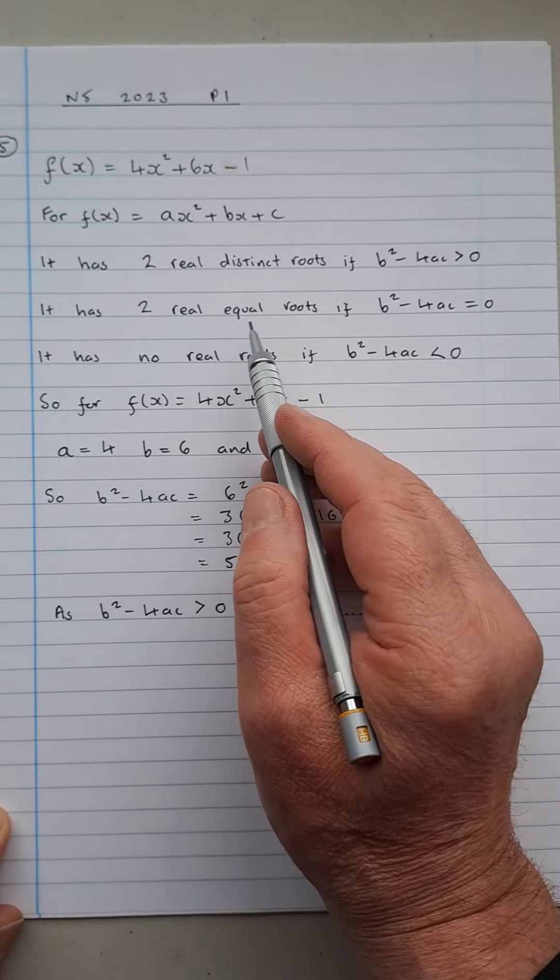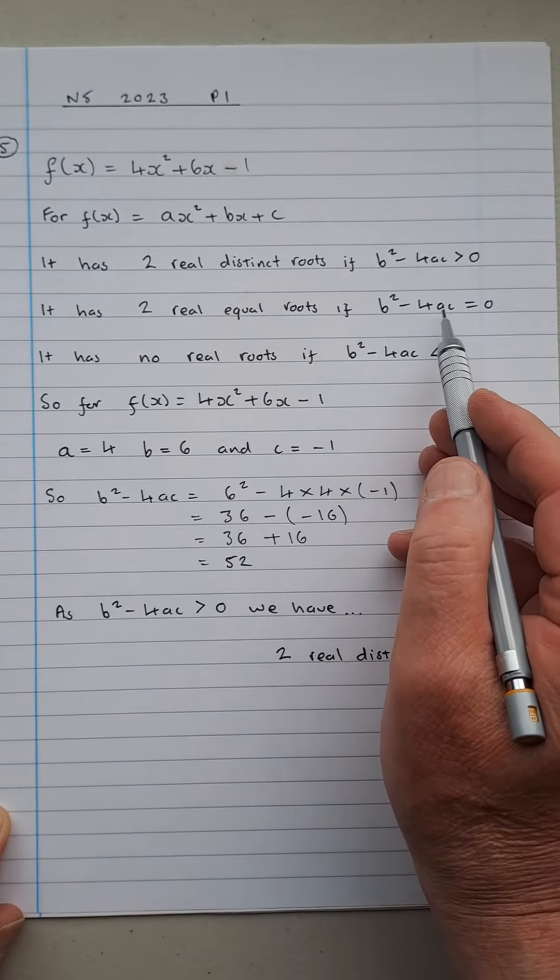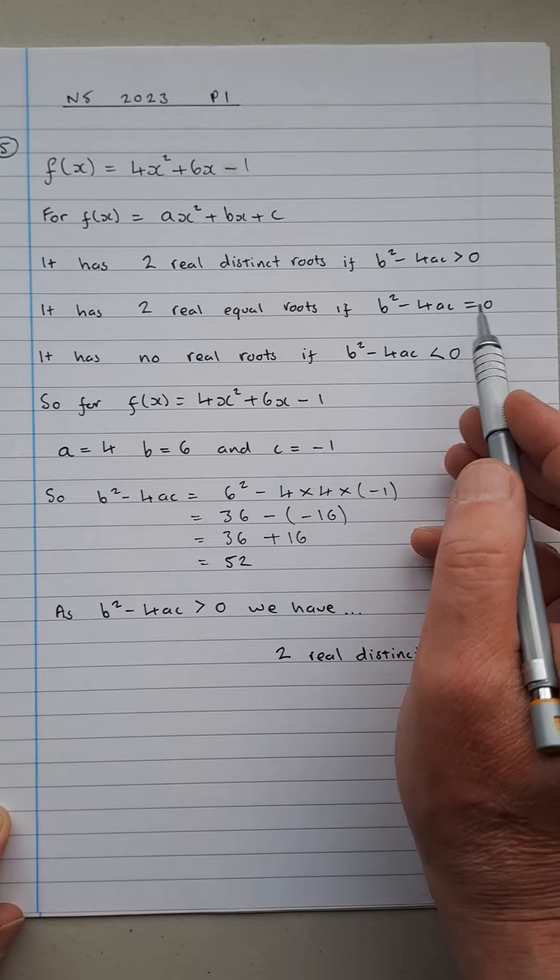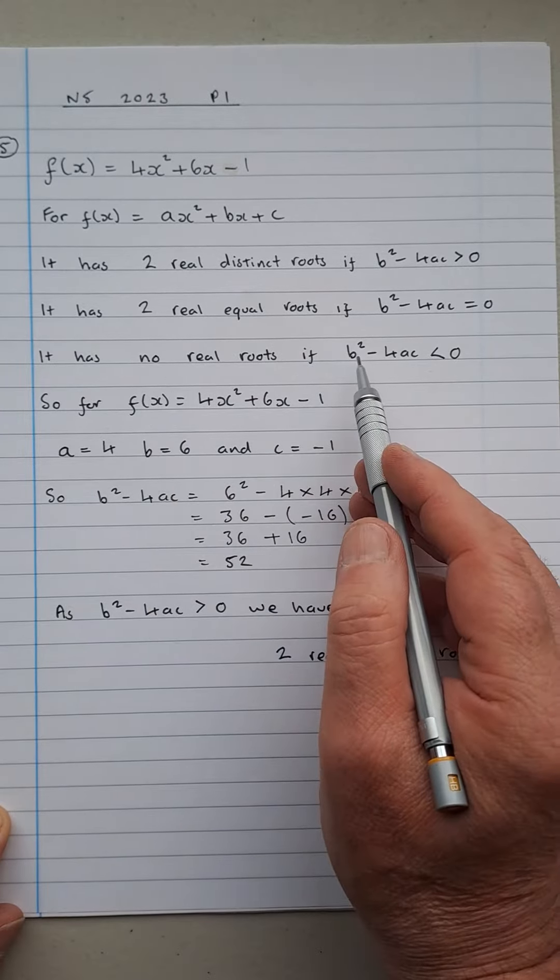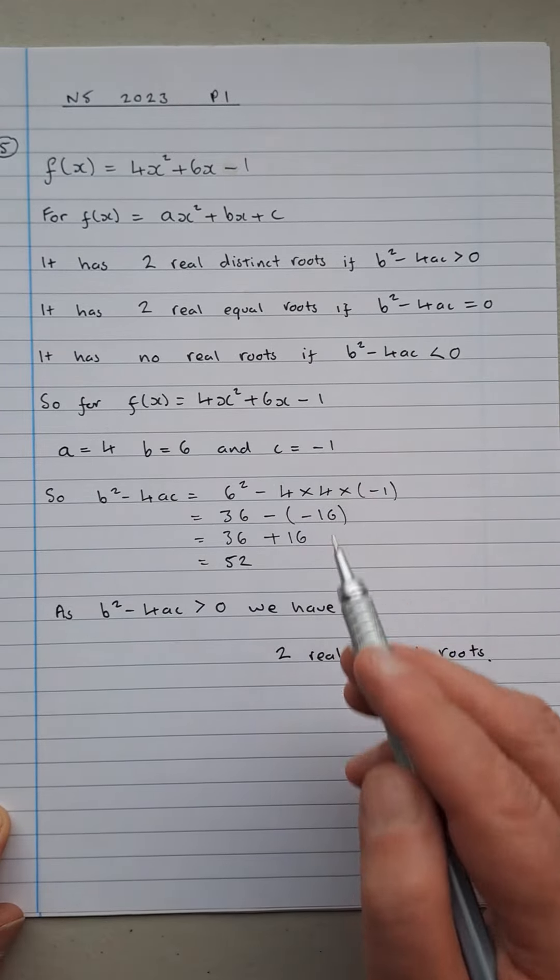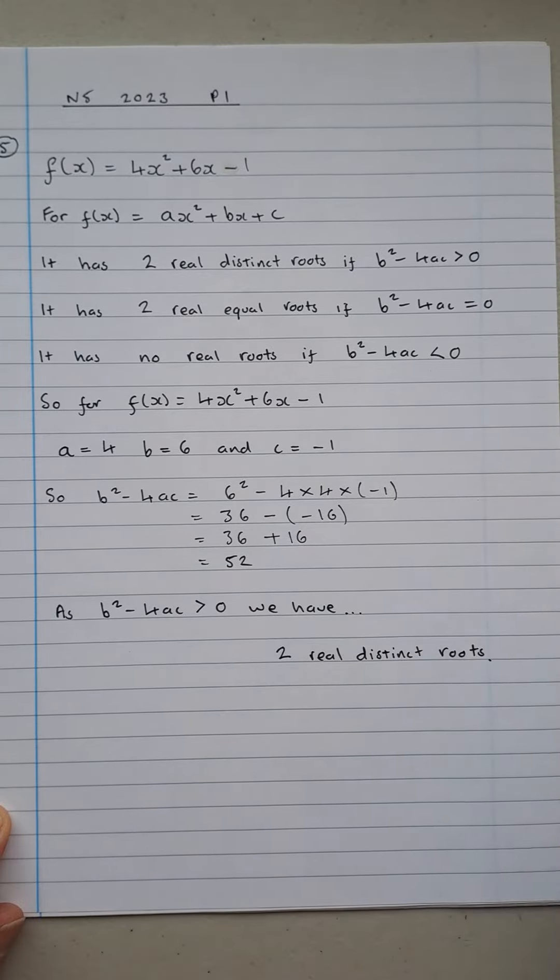It's got two real equal roots if b² - 4ac equals zero, and it's got no real roots if the discriminant, that's b² - 4ac, is less than zero.